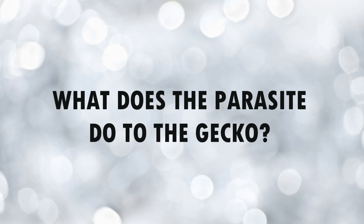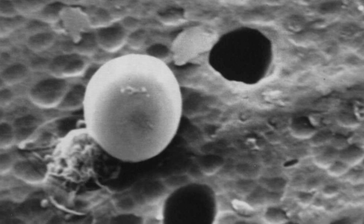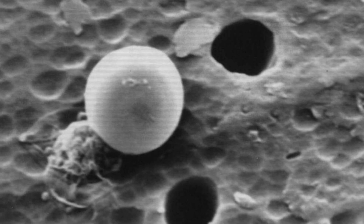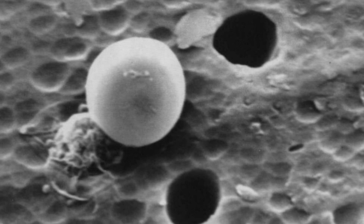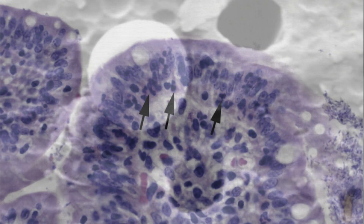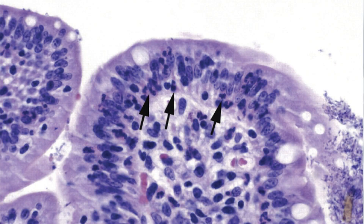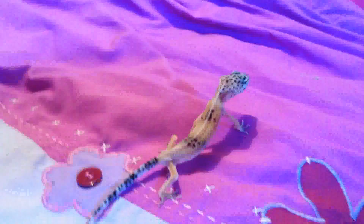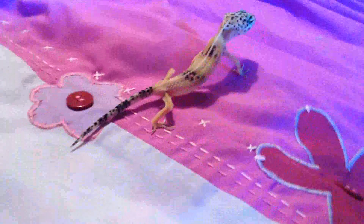So what is the parasite doing to your lizard's system? In the lizard, the parasite invades the GI tract and the lining of the intestine, creating inflammation and lesions that severely inhibit the absorption of nutrients. As you can imagine, a gecko can go downhill very quickly.